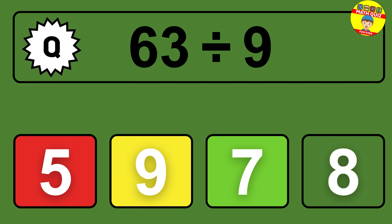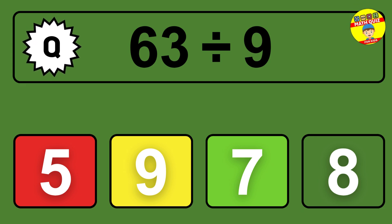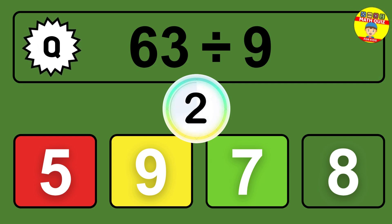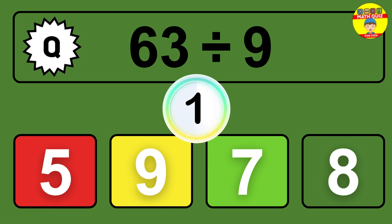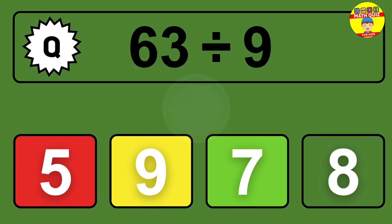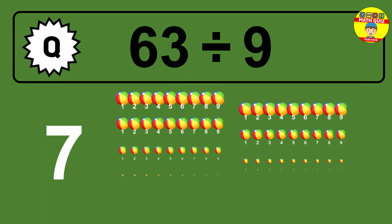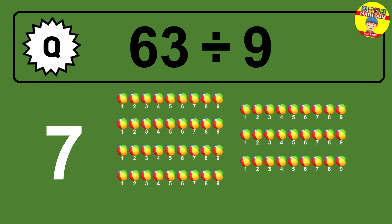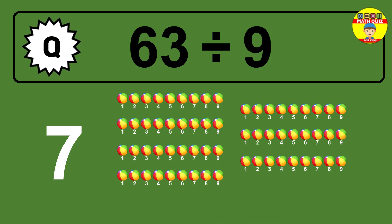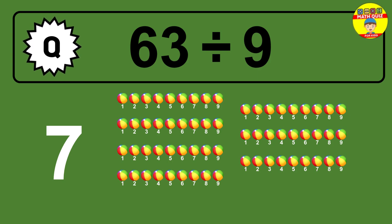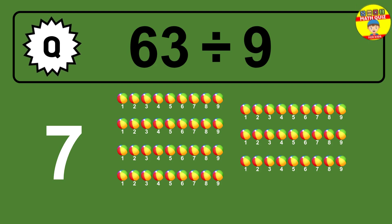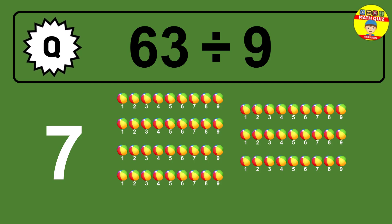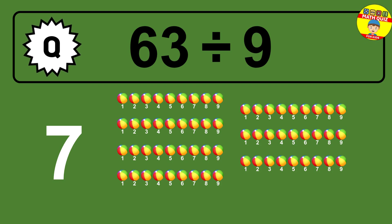63 divided by 9 — time to think. Let's go to the solution. Divide the number 63 by 9. Each group contains 9 units, so dividing 63 by 9 results in 7 equal groups. Thus, the result is 63 divided by 9 equals 7.